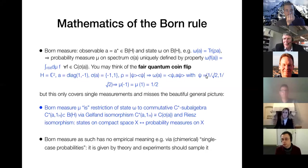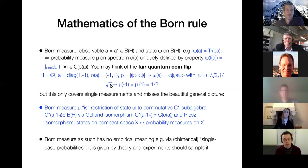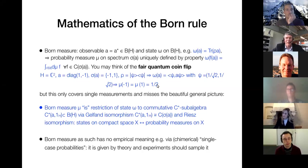The usual initial state for a fair quantum flip is 1 over the square root of 2, and again 1 over the square root of 2. If you then apply this to the definition, the Born measure on the spectrum will just be the 50-50, the Bernoulli measure.